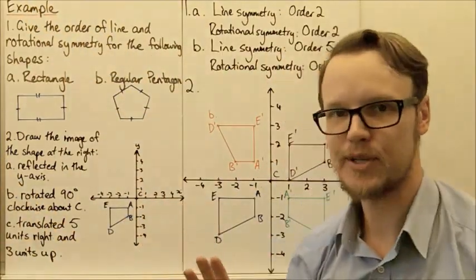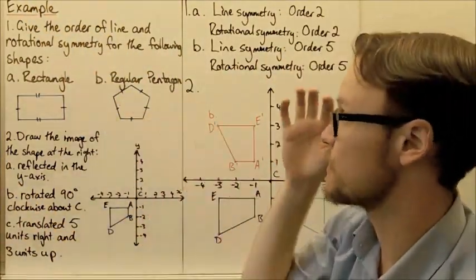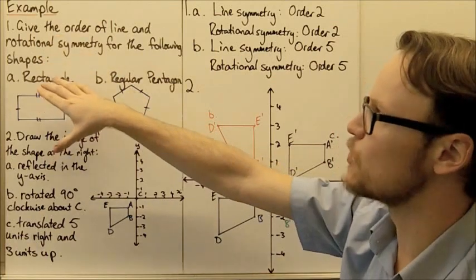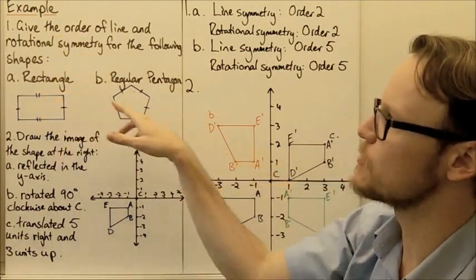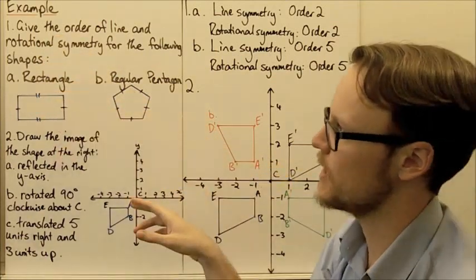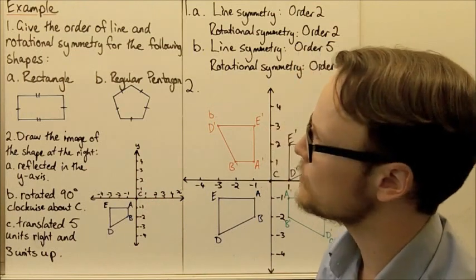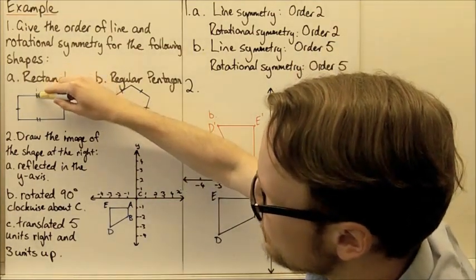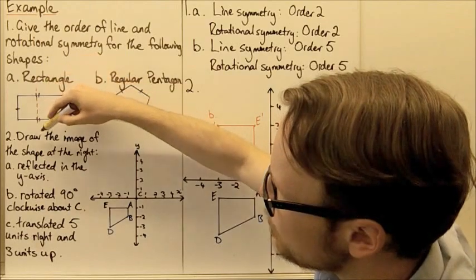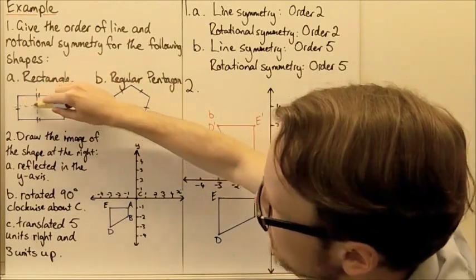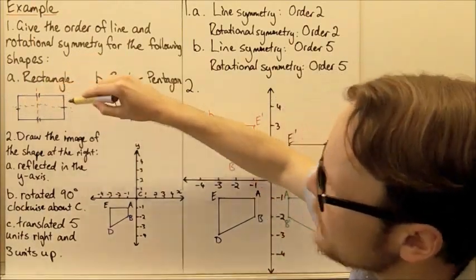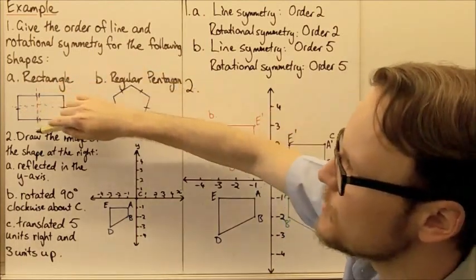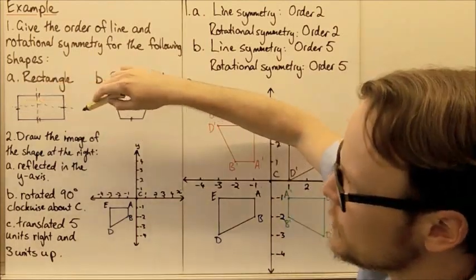So let's have a look at some examples. The first example looks at symmetry — we need to give the order of line and rotational symmetry for the following shapes. For our rectangle, the only lines of symmetry are one down the centre and one across the midway, so there are two possible lines of symmetry.